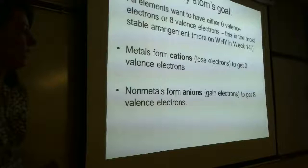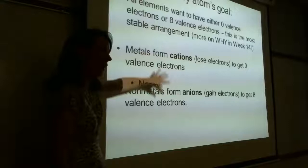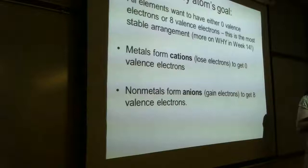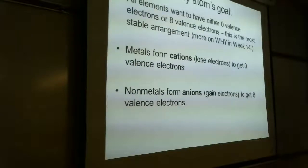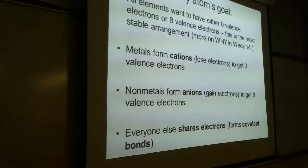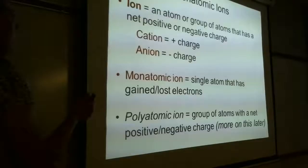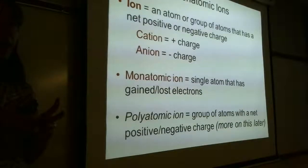Every atom's goal is to have either zero or eight valence electrons — that's the most stable electronic configuration. Metals, everything to the left of the zigzag line, form cations by losing electrons to get down to zero. Non-metals form anions by gaining electrons to get up to eight. An ion is an atom that has a net charge — cations are positive, anions are negative.